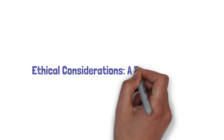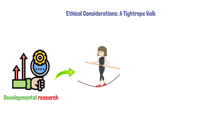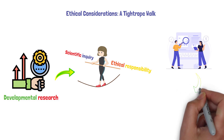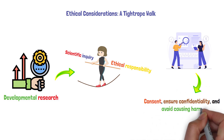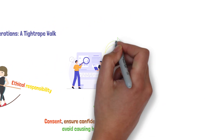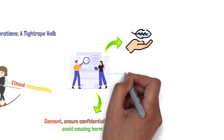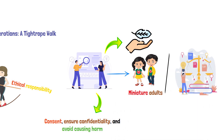Ethical considerations — a tightrope walk. Conducting developmental research is a bit like walking a tightrope. You have to balance scientific inquiry with ethical responsibility. Researchers must obtain informed consent, ensure confidentiality, and avoid causing harm. They must also be particularly sensitive when working with children, who are not just miniature adults, but individuals with their own rights and needs.